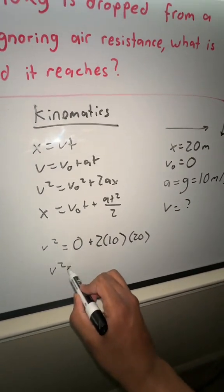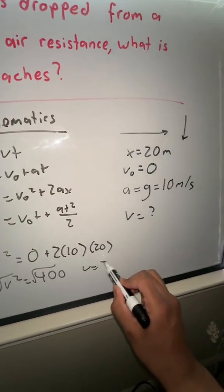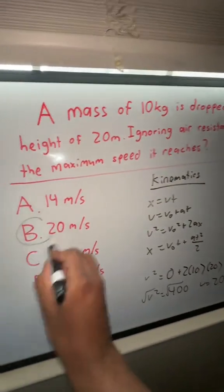We're going to get v² equals 400, and then you just square root this and you're going to get v equals 20 meters per second. So that is going to be answer B.